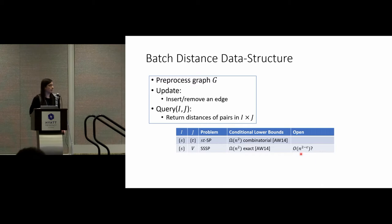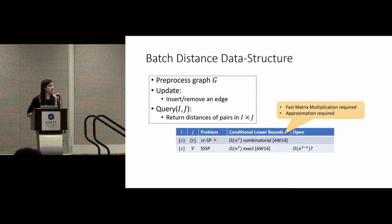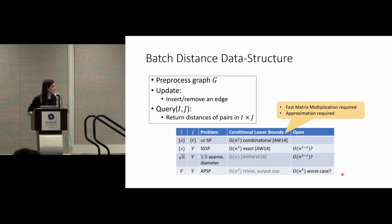The problem is: can we beat N-square update time? Aboud and Bacilevska-Williams have shown that you must use fast matrix multiplication, because any combinatorial algorithm is bound to need N-square time just for ST distance already. Also, if your result maintains exact distances, then you are bound to need N-square update time as well. This model also captures other special cases — for example, if you can maintain distances for roughly root-N many sources, then you get a 1.5 approximation of the diameter.